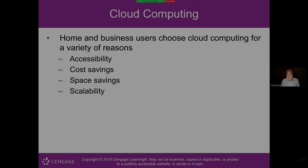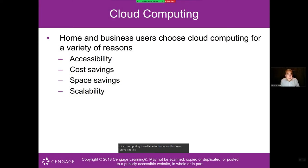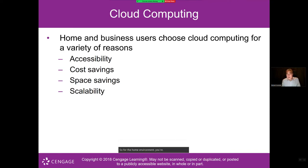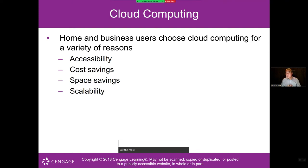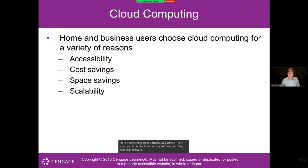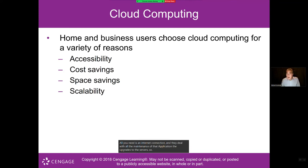Cloud computing is available for home and business users with four main benefits: accessibility, cost savings, space savings, and scalability. At home, you're probably familiar with Google Docs or Google Drive. Businesses use data as a service — companies like Amazon provide enormous storage for backing up data. The most popular cloud service is software as a service, where you subscribe to a company's software, they host it, handle all server maintenance and upgrades, and you just need an internet connection — a big cost and space savings.